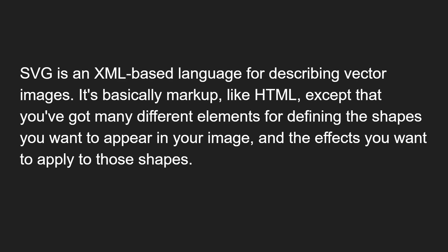SVG is an XML-based language for describing vector images. It is basically markup like HTML, except that you have many different elements for defining the shapes - things like rectangle, circle, and text - that you want to appear in your image, and the effects you want to apply to those shapes.